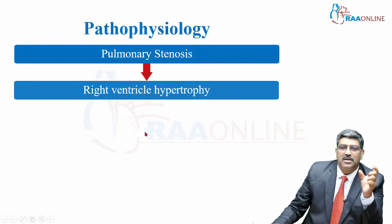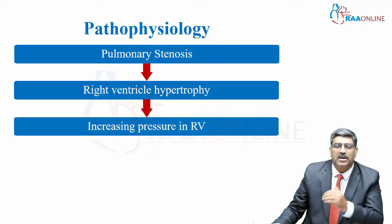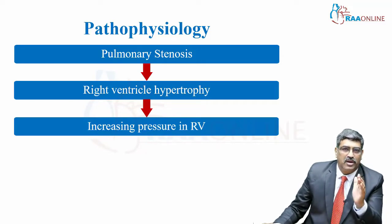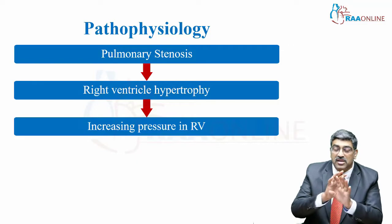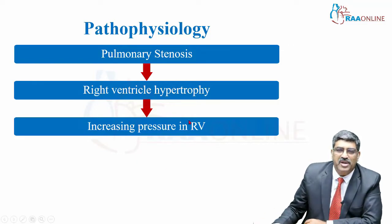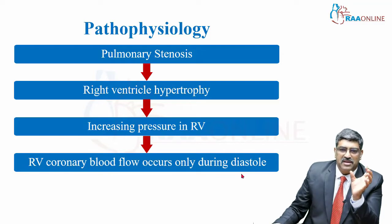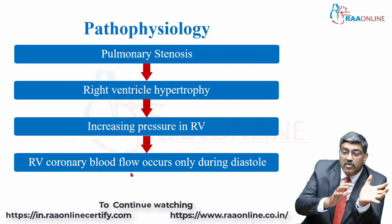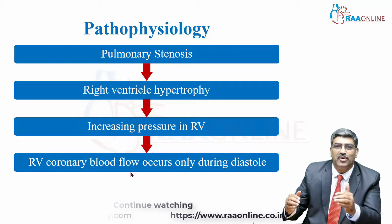With pulmonary stenosis, the right ventricle hypertrophies and RV pressure rises. Importantly, the right ventricle does not tolerate increased pressure overload — this is a key physiological difference between the right and left ventricle. As pressure increases, the right ventricle begins to fail. Additionally, as RV pressure rises, coronary blood flow to the right ventricle is restricted to diastole only. Normally the RV enjoys luxury perfusion during both systole and diastole, but elevated pressure limits this to diastole alone.